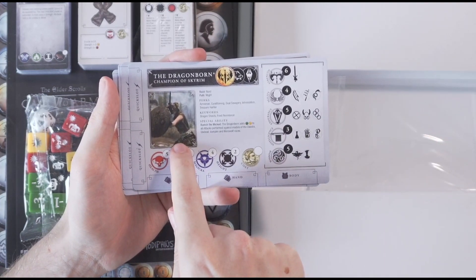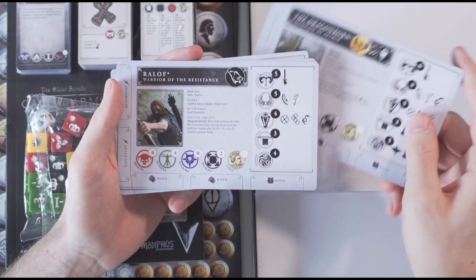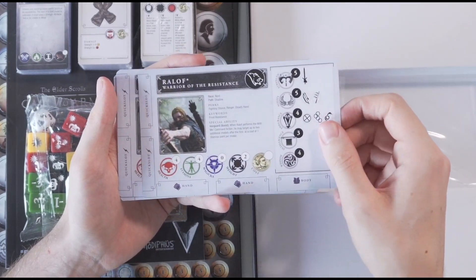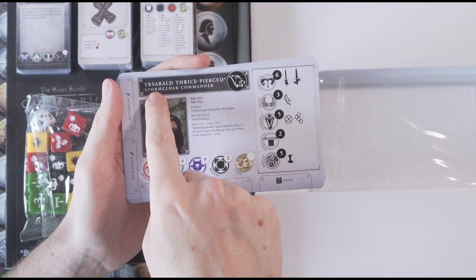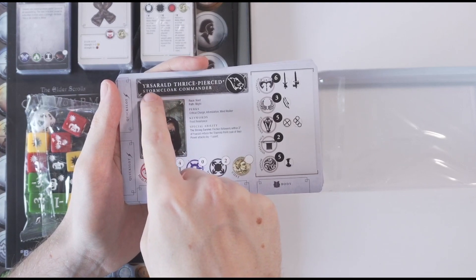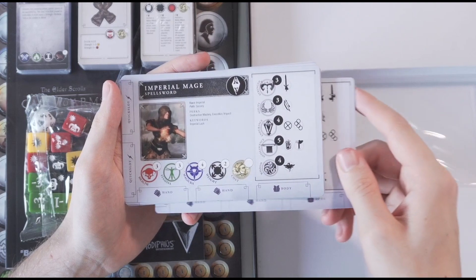And it tells us, oh my god, they actually took an in-game screenshot. That's really nice. And then you've got Ralof, who's another character. And it has all their different attributes. This is the name I can say. Ulfric Stormcloak. Thrice Pierced. Imperial Mage.